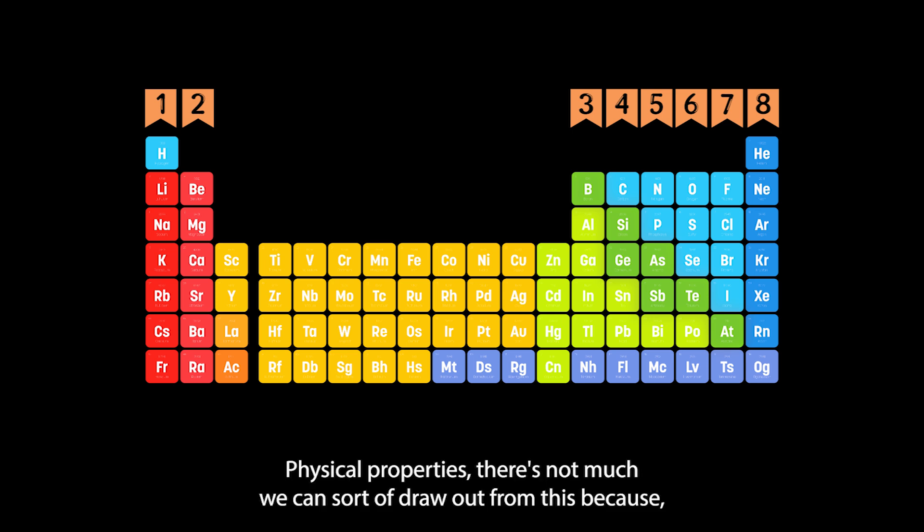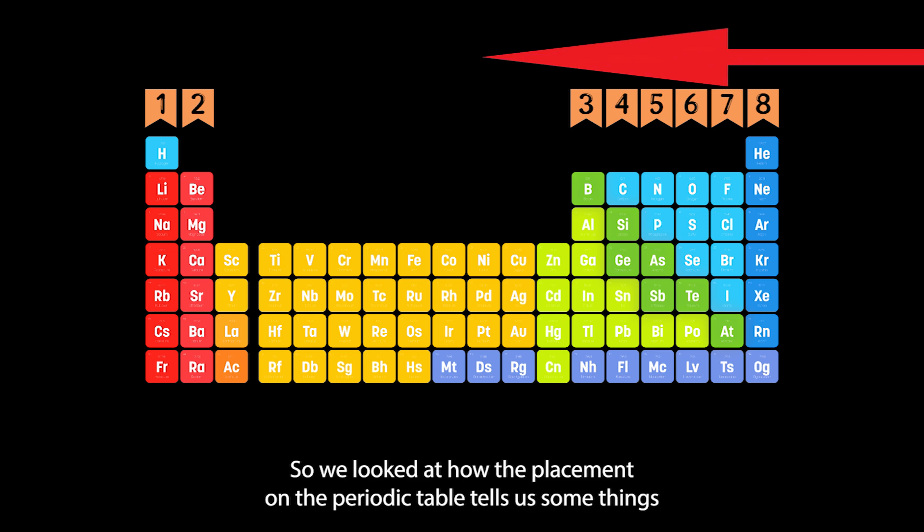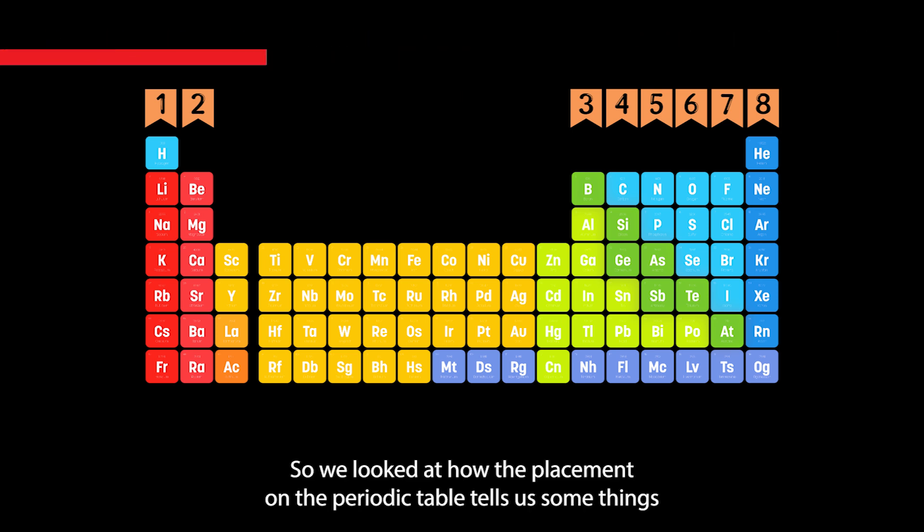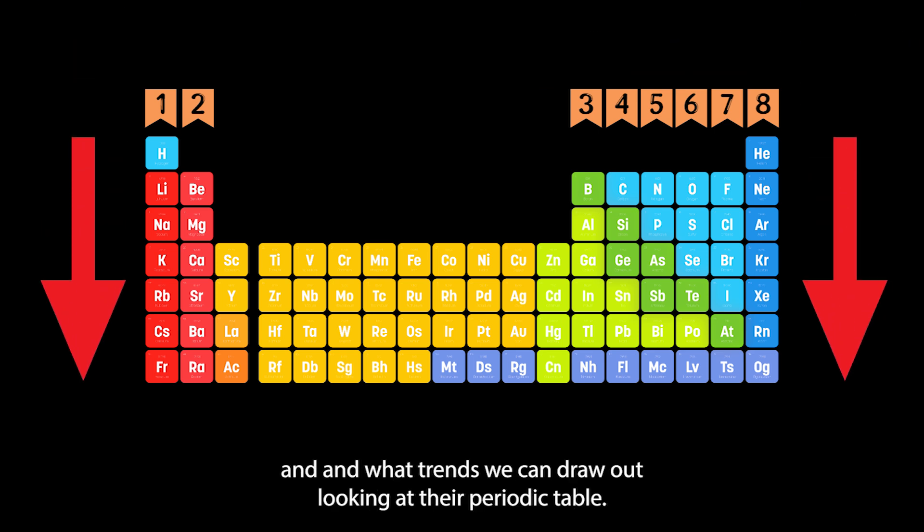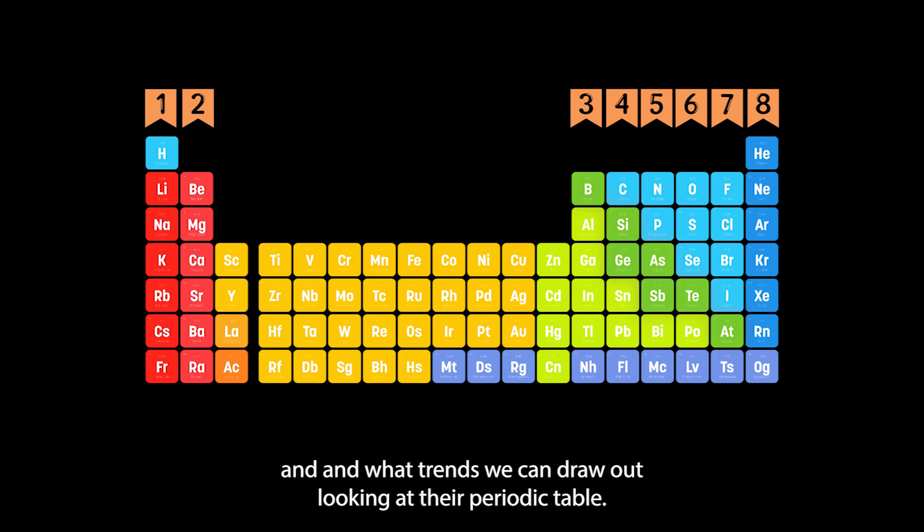That summarizes physical properties that we can see from the periodic table. There's not much we can draw out from this because the periodic table doesn't tell us a lot about physical properties, but those are the general things we can draw out. We looked at how the placement on the periodic table tells us some things about the physical properties of a particular chemical and what trends we can draw out by looking at the periodic table.